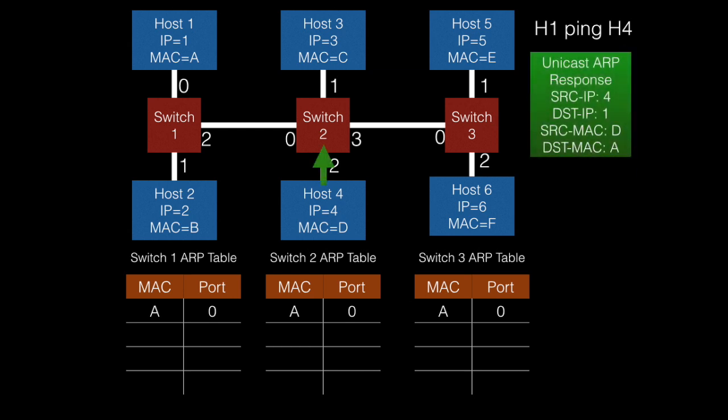Now that host4 has received an ARP request, it must generate an ARP response. The ARP response is going to be a unicast message, and it will have additional data, because host4 knows the IP address and MAC of both the destination and the source. As you can see, the source IP is going to be 4, the destination IP is 1, and the source and destination MAC IDs are D and A respectively.